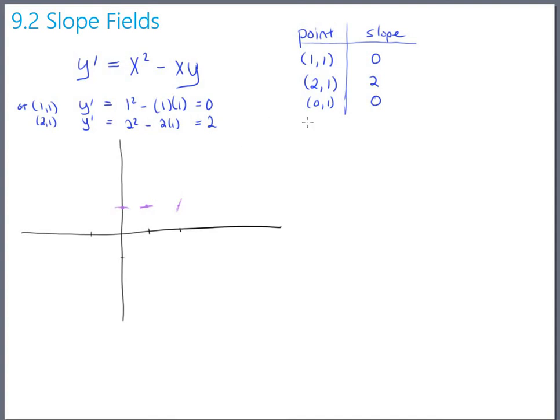So if you plug in one for x and two for y, let's see, that'd be one minus two, so it'd be negative one. So at the point one, two, which is up about here, the slope's actually negative one.